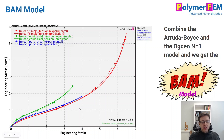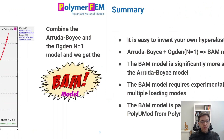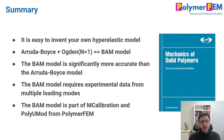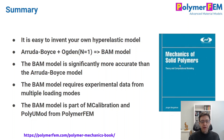It fixes the issues we had with the Arruda-Boyce 8-chain model and is similar to what you would get with the Gent model. To summarize: it's easy to invent your own hyper-elastic model — you just have to pick components that you like to combine, or come up with your own. In this case, Arruda-Boyce plus Ogden n=1 gives my new model, the BAM model. I also talk about this in my book, so if you want to read more about it, you can check that out.